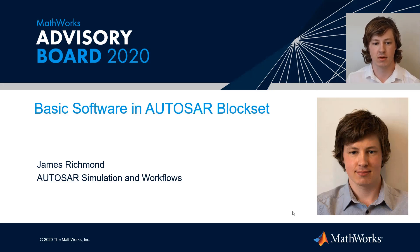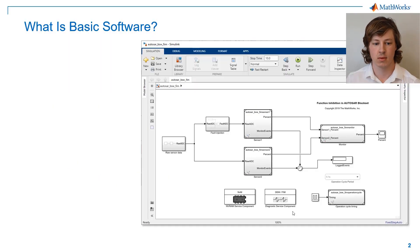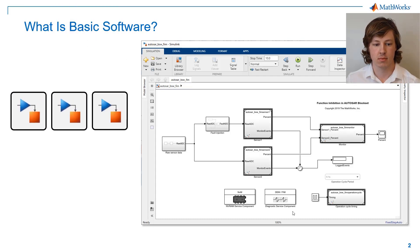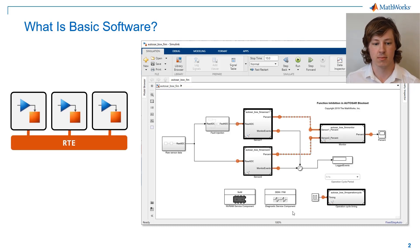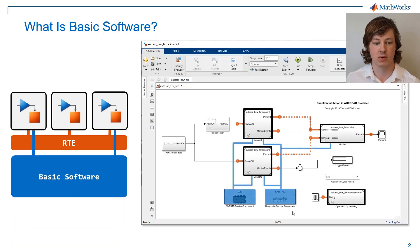Hello, my name is James and today I'd like to show you how we support BASIC software in AutoCell Blockset. What is BASIC software? We can see here we have a Simulink model which has four components in it. Each is defined separately in its own model and referenced here. These components communicate with each other via the RTE, in this case represented by signal connections. BASIC software is a set of standardised functionality shared between components, accessible through the RTE.